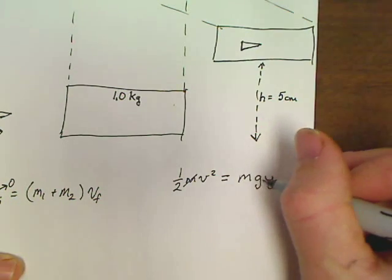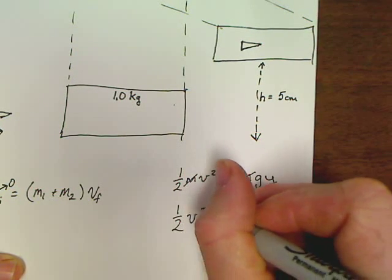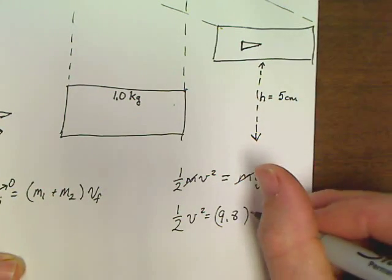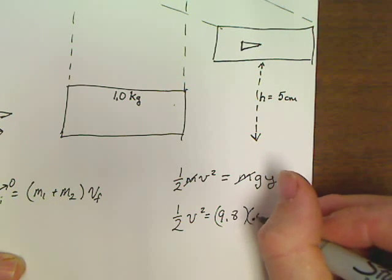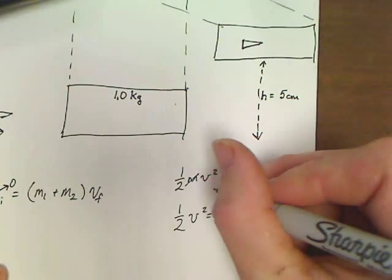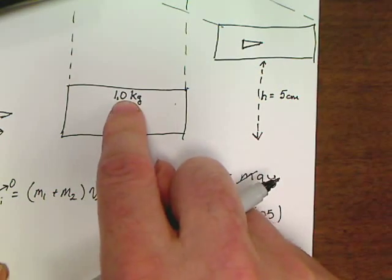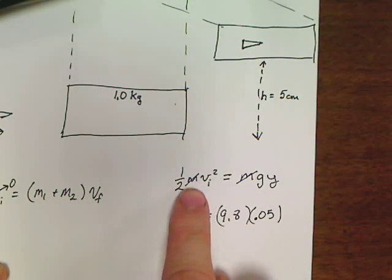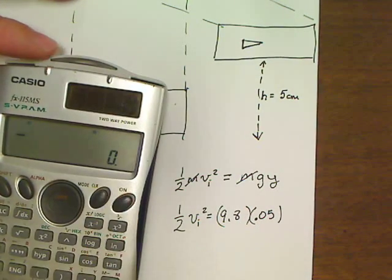The mass cancels out. And now we take a look. One half V square equals 9.8 times, it said it was hit 5 centimeters into the air. Oh, 5. Look at what we can find. This velocity, this is my velocity initial. I can find the velocity that this had to be going to swing up into the air just by setting kinetic and potential energy equal to each other. Energy is not created or destroyed.